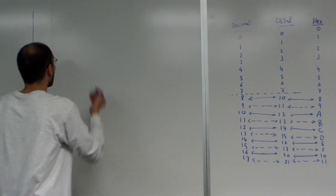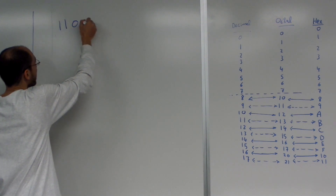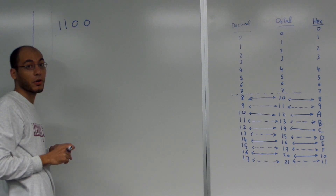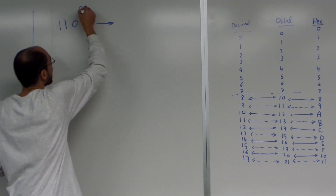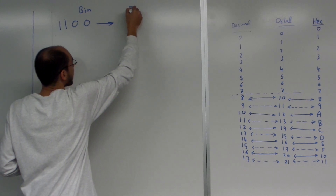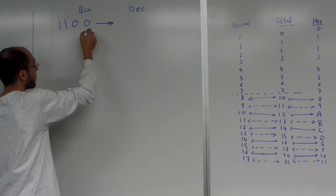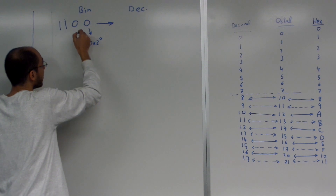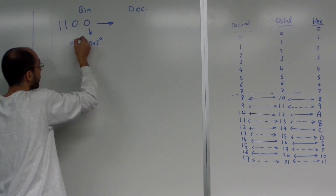So if you have a number in binary, let's say we have 1, 1, 0, 0, and I'd like to convert this number from binary to decimal. We look at the rightmost zero and say that's zero times two to the power zero, and then plus zero times two to the power one.